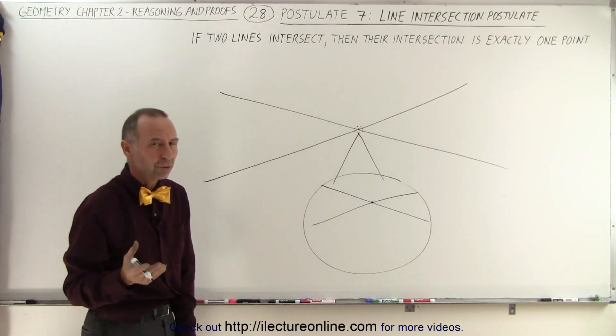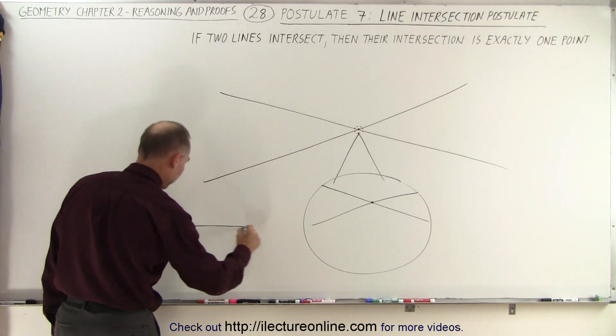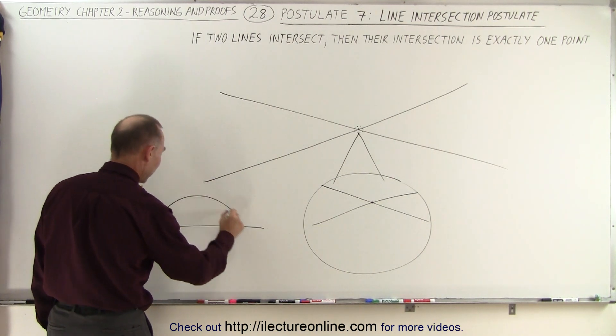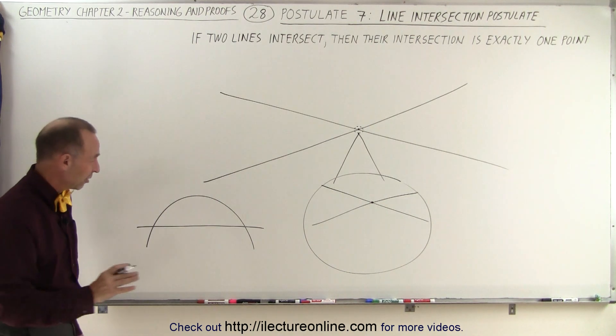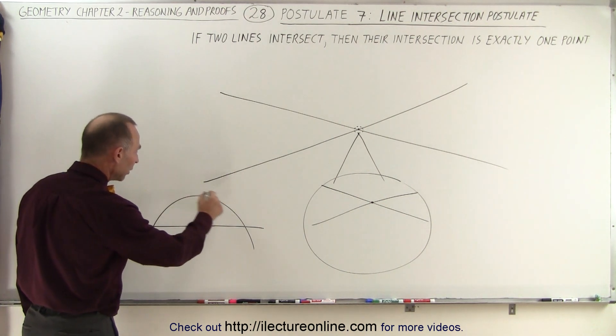Now you may say, well, I can draw lines differently. What if I draw a line that looks like this for one line, and here's another line? Look, they cross in two places. But that's not, by definition, a line. This is actually a curve.